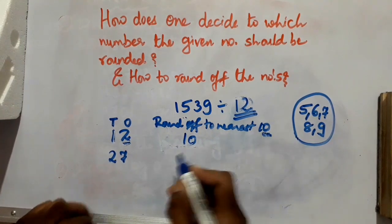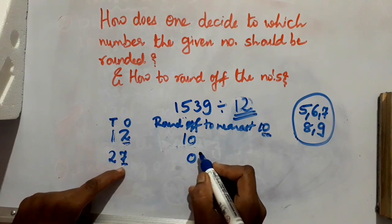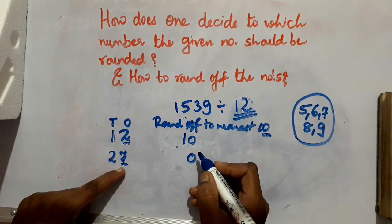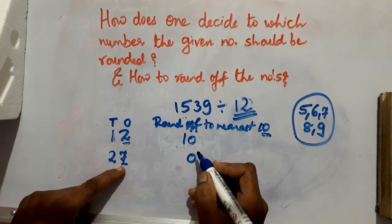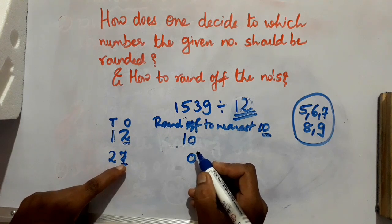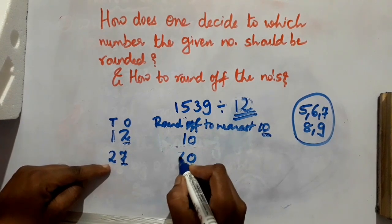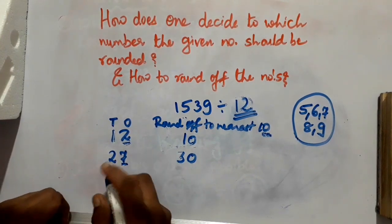Say you have 27 and you have to round off to the nearest 10. Nearest 10 means underline 1 digit and write 10. Now check the underlined number — here it is 7. Is it greater than or equal to 5? Yes, it is greater than 5. So you add 1 to the previous number — 2 becomes 3. So 27 rounded to the nearest 10 is 30.